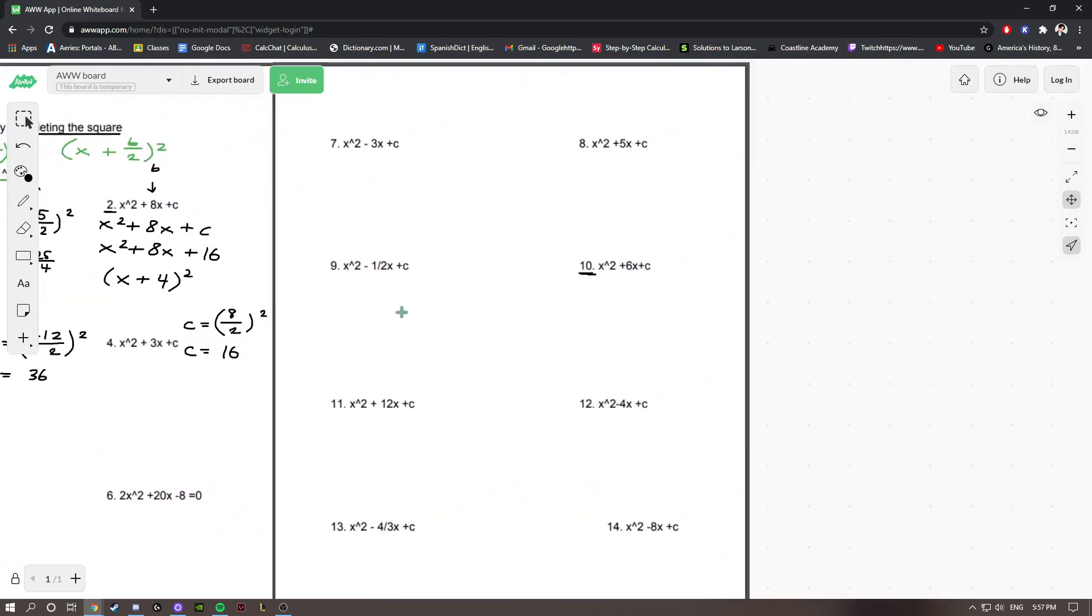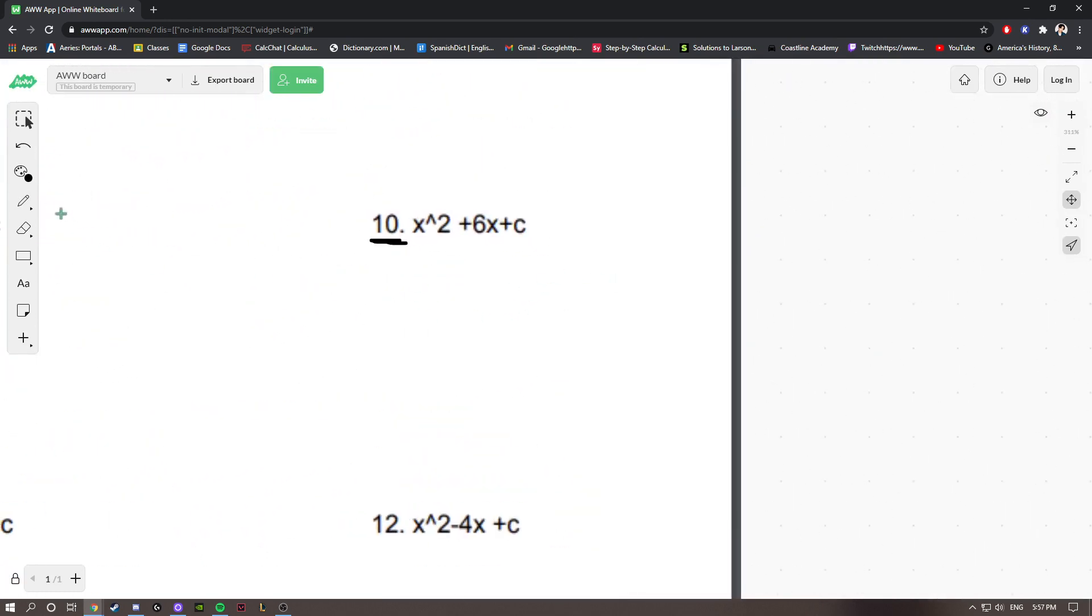Now, lastly, we are doing number 10. Same thing. We have x squared plus 6x plus c. Now, what does c equal? c is equal to b, which is 6, divided by 2, squared. So, c is equal to 3 squared, which is 9.